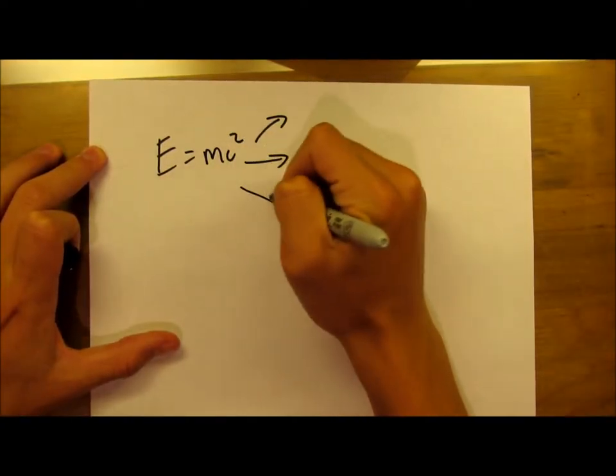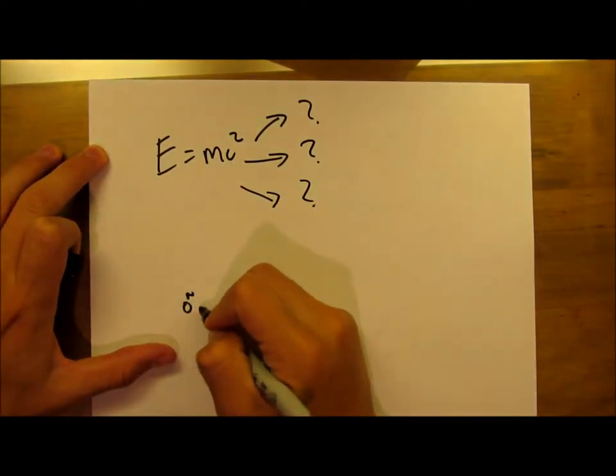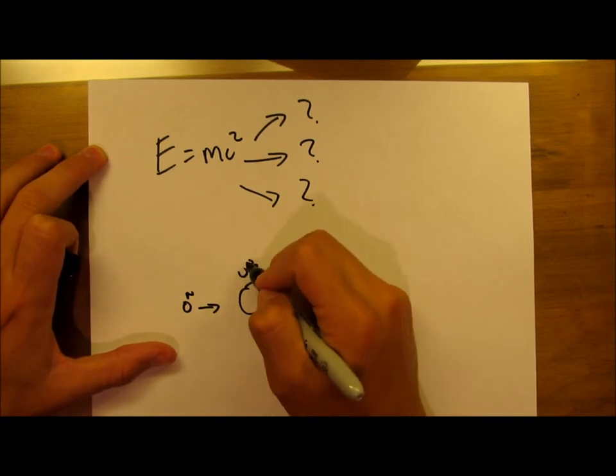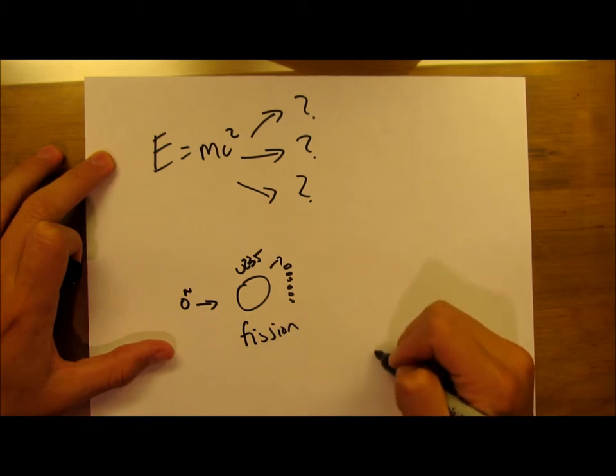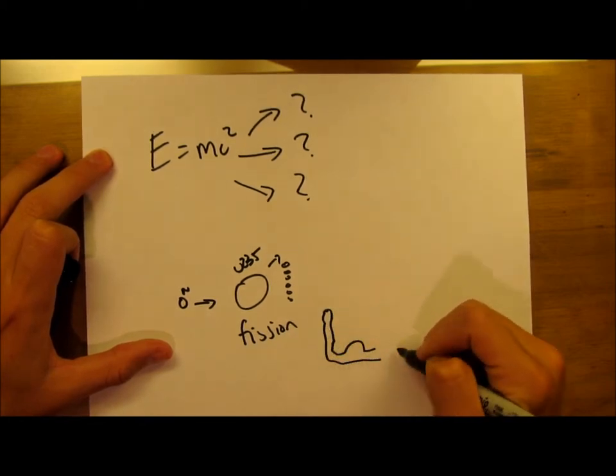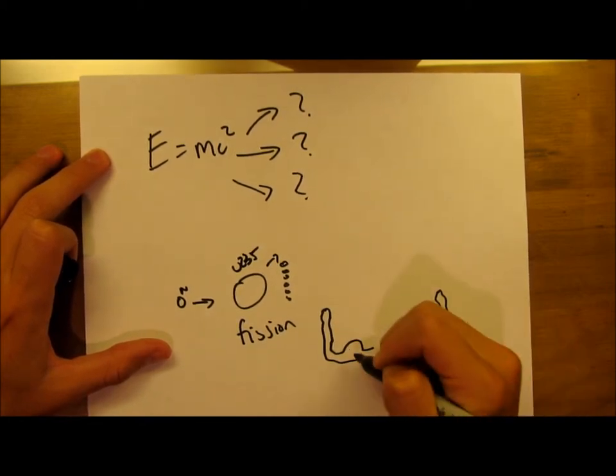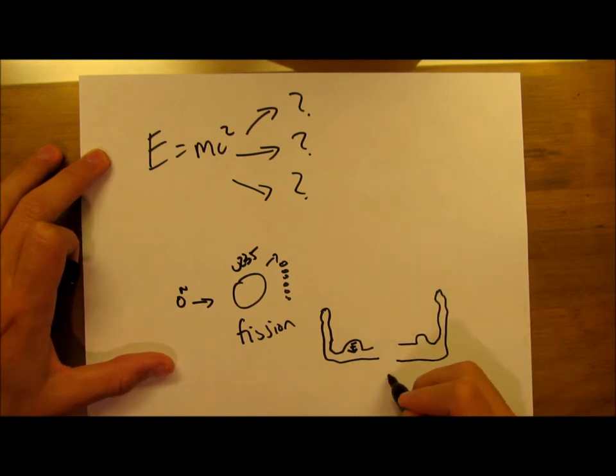Later, scientists began to figure out that this E equals mc squared equation can be used for more than just creating atomic bombs. They developed the equation and figured out that it can be used for creating energy out of nuclear fission and powering large transportation units like nuclear submarines.